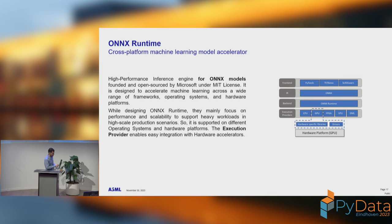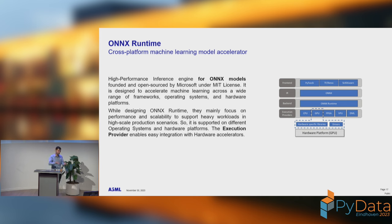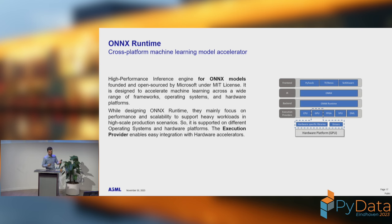ONNX Runtime is the next evolution step: you have the model, you want to run it, and you want to apply a lot of optimization. ONNX supports execution providers, so each hardware manufacturer or their team of engineers implements those providers, and you can just plug them in — it's more like an open-source ecosystem. If you want to run a machine learning model on an FPGA or any other device from any manufacturer, you can implement the provider and use it. It's also a very fast runtime, so I'd suggest it as a first choice, especially if you're already using ONNX.